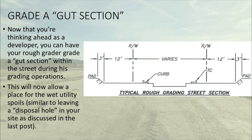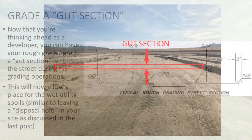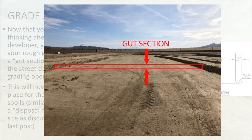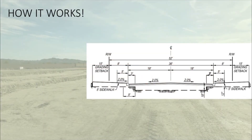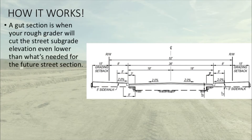This is similar to leaving a disposal hole in your site just as we discussed in the last post. And here's a photo of an actual gut section within a graded street. So here's how it works. A gut section is when your rough grader will cut the street subgrade elevation even lower than what's needed for the future street section.